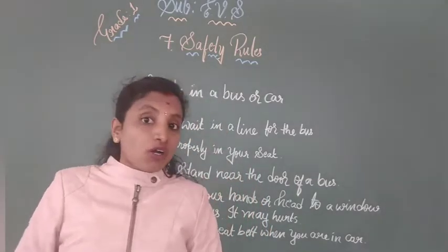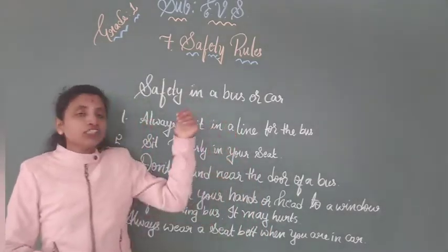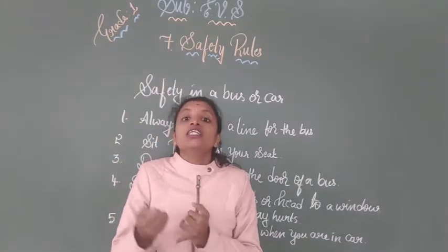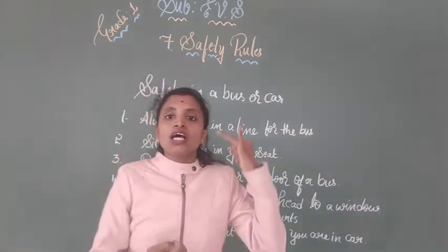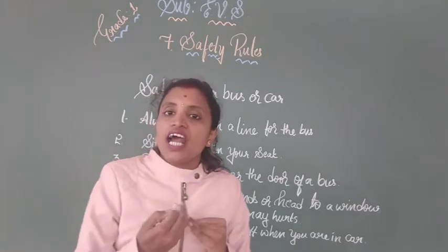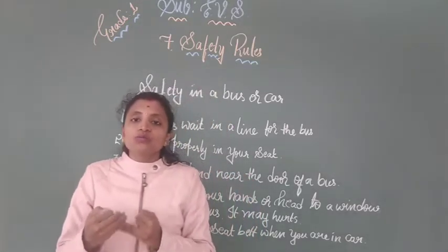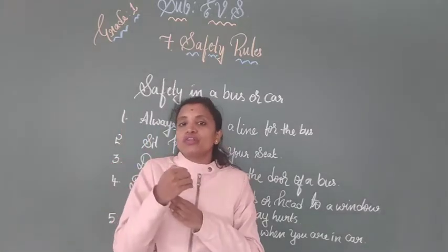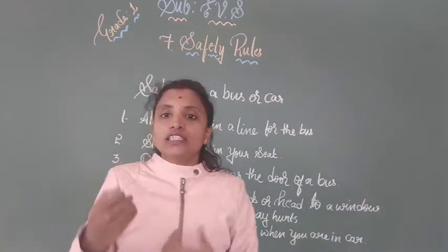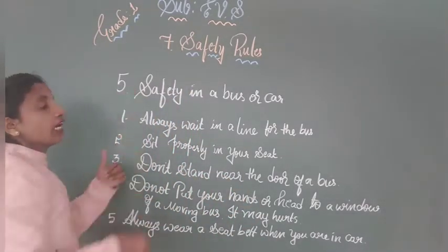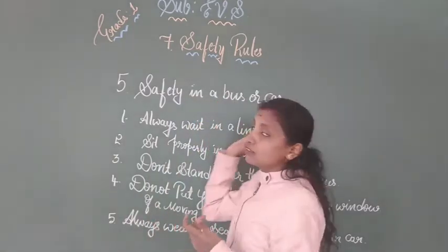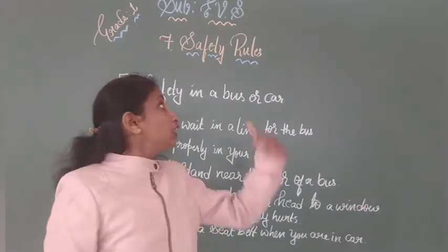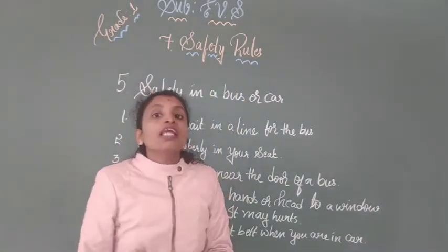Can we recall again what are the topics we learnt in this chapter? First: safety on the road. Second: safety at home. Third: safety at school. Fourth: safety while swimming. And the fifth: safety in a bus or car. These are the five points we learnt in this chapter.